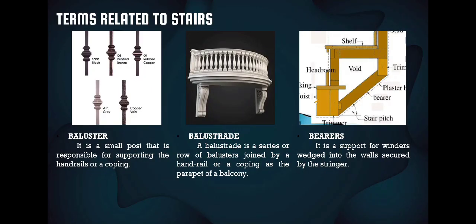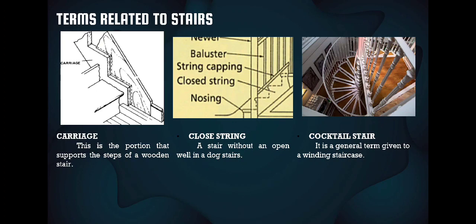Here are terms related to stairs. First, a baluster is a small post responsible for supporting the handrails or coping. A balustrade is a series or row of balusters joined by a handrail or coping, as the parapet of a balcony — essentially an array of balusters held together by a handrail. Bearers are structures that support winders, which go into the wall and are secured by a stringer.